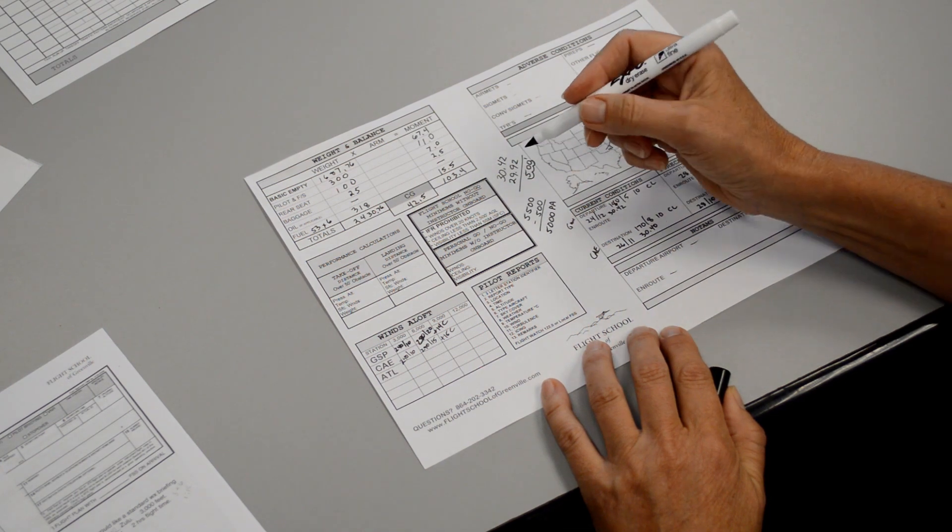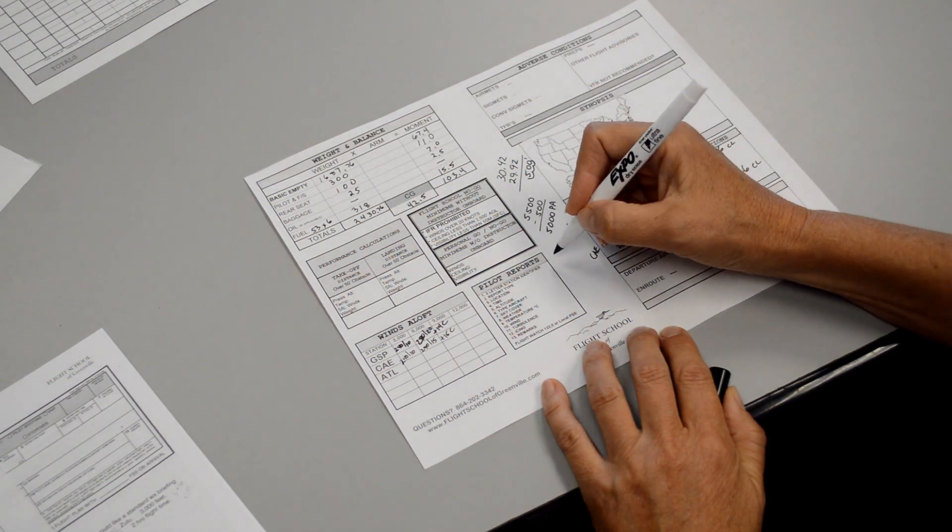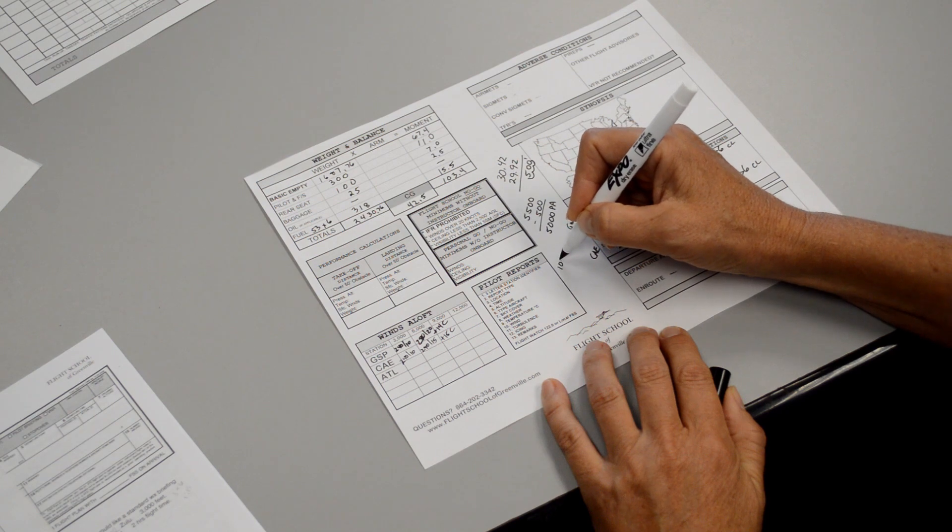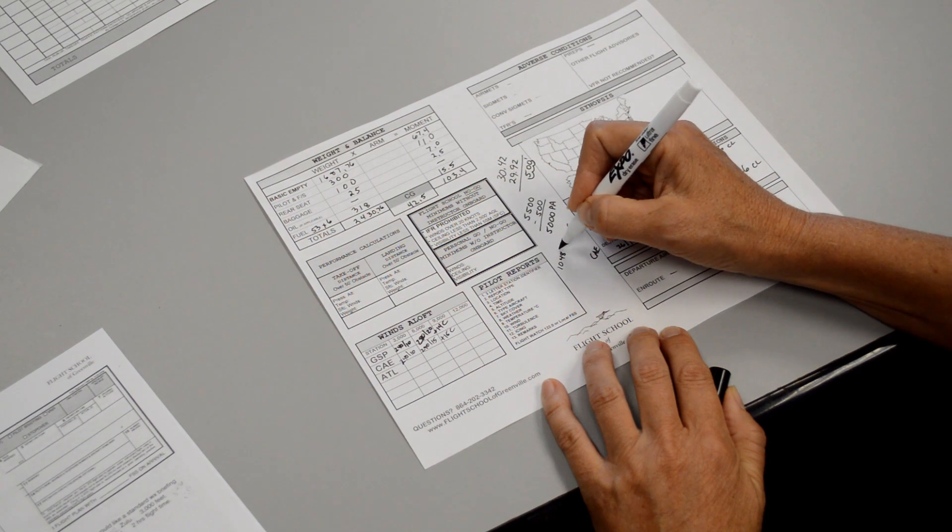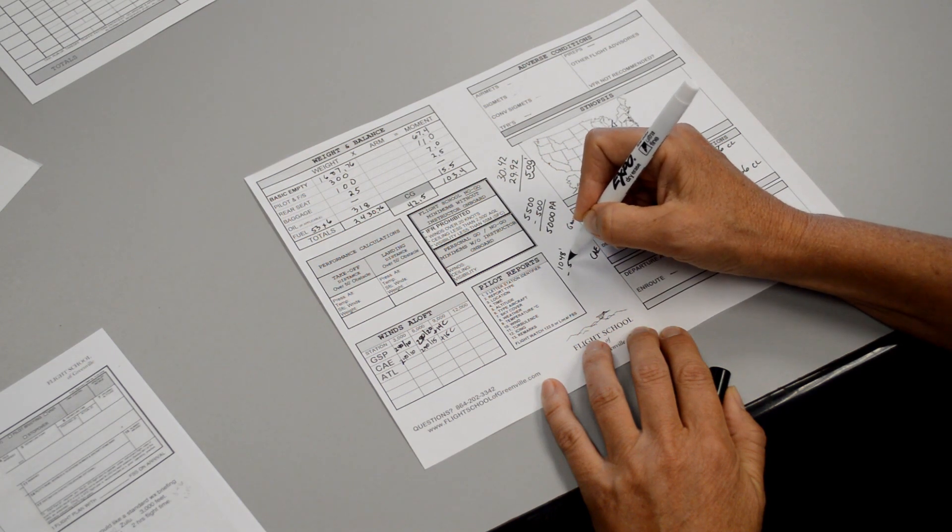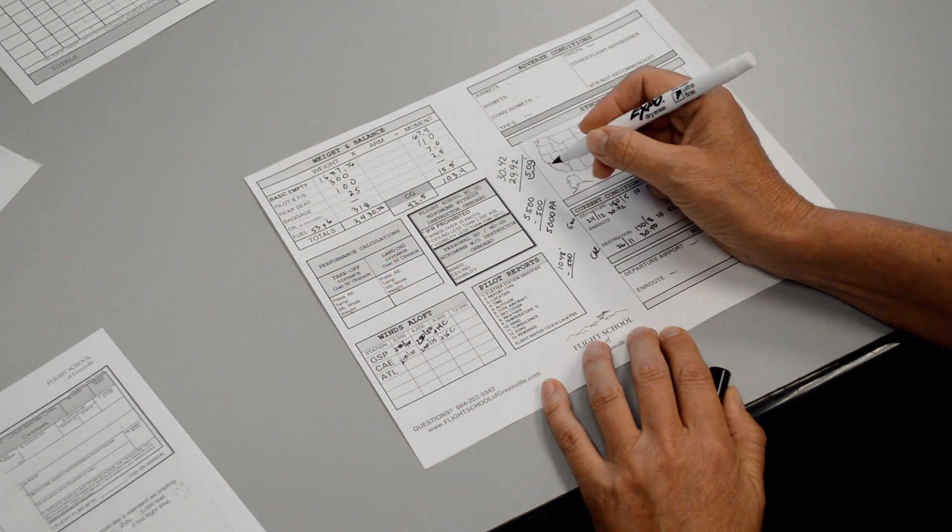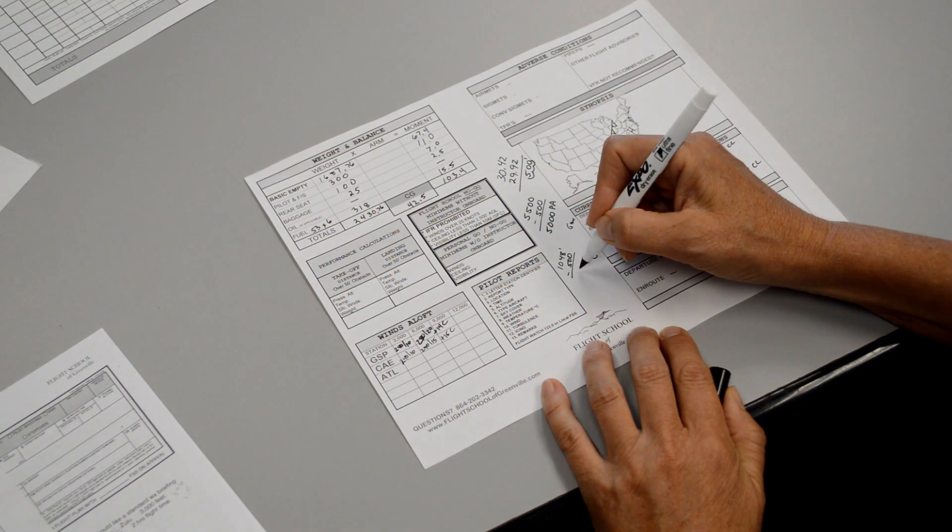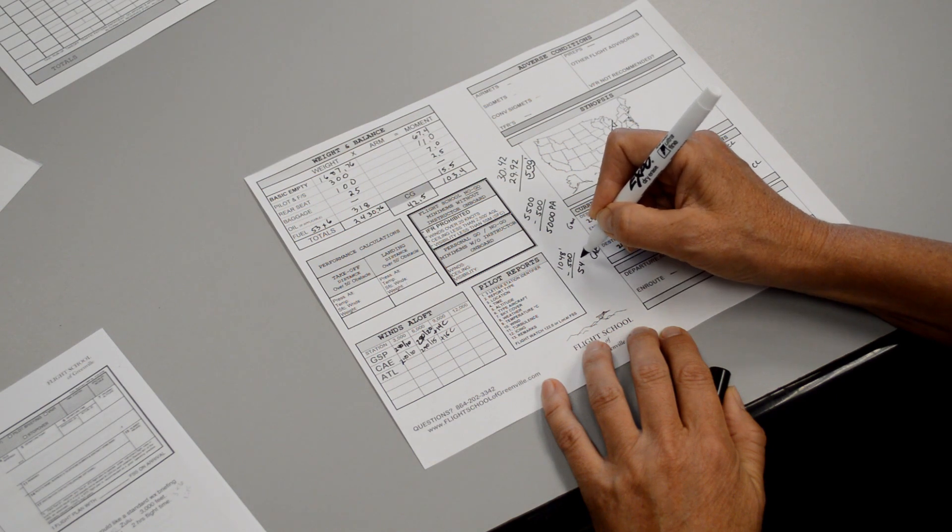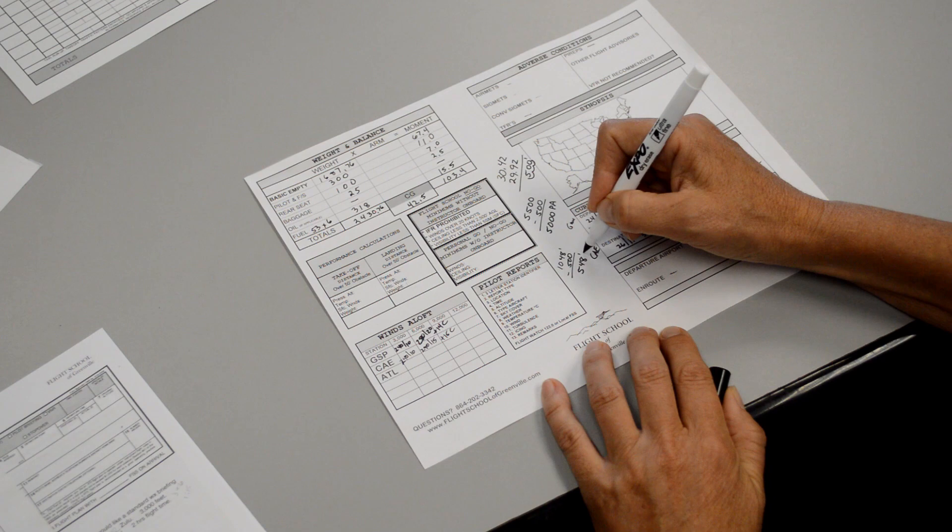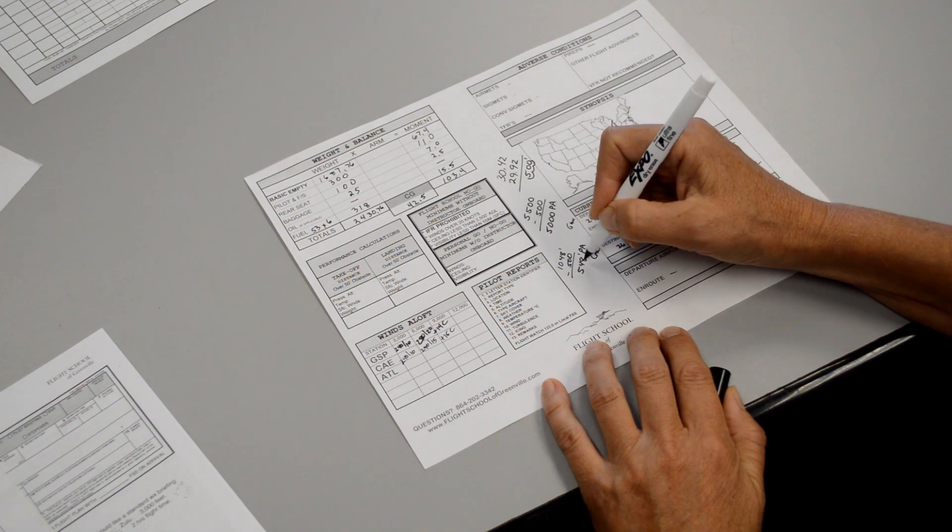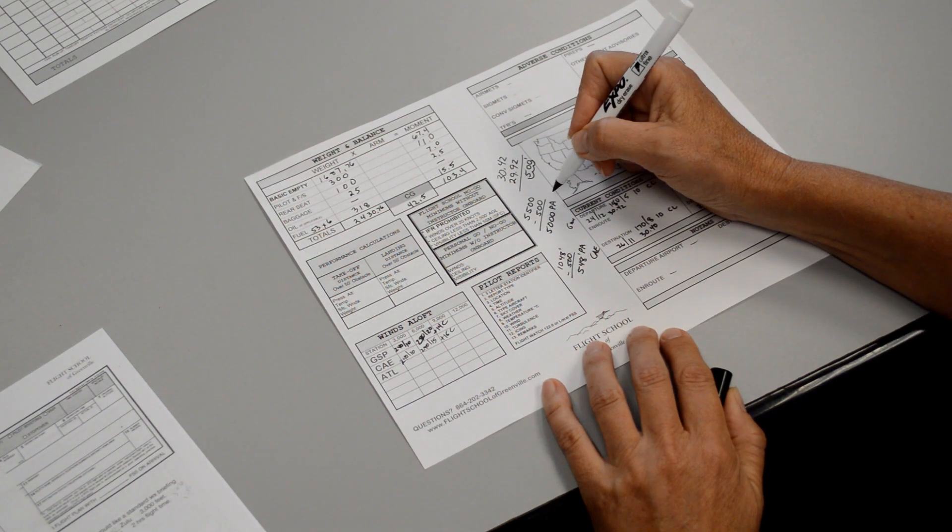And for our takeoff, our pressure altitude will be 1,048 field elevation minus 500 for our pressure altitude correction, so our pressure altitude for our departure will be 548 feet. That's the pressure altitude for our takeoff. This will be our pressure altitude for the cruise portion.